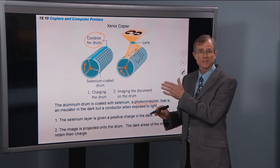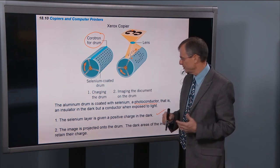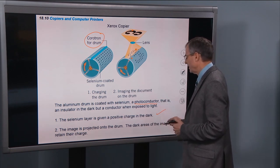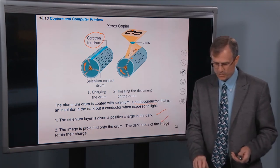You couldn't, you wouldn't be able to see it yet. It's just an etching in charge. And so the dark areas of the image retain their charge.